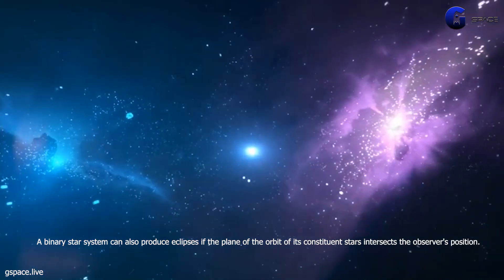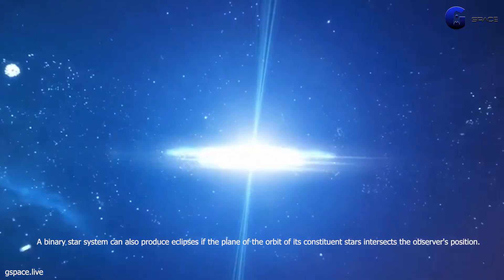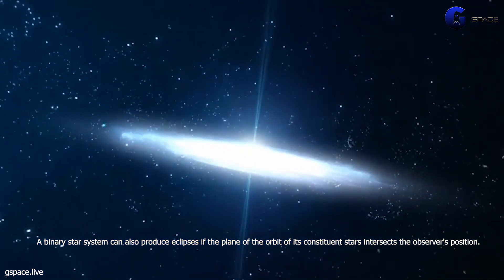A binary star system can also produce eclipses if the plane of the orbit of its constituent stars intersects the observer's position.